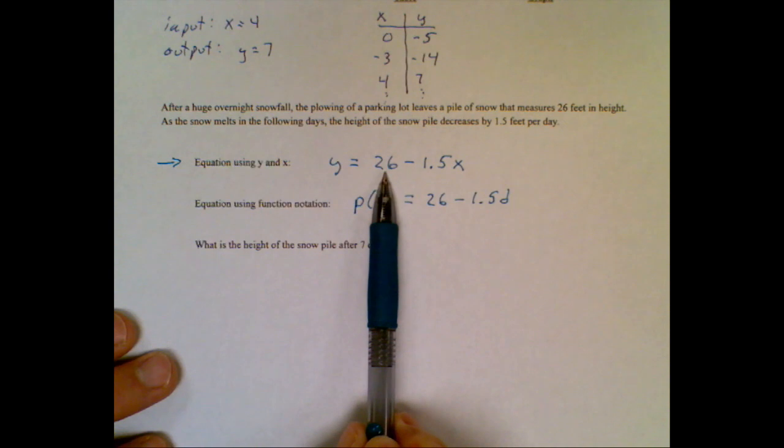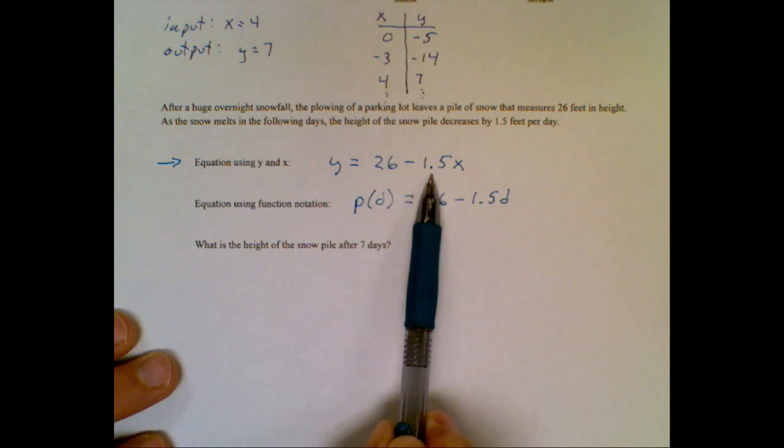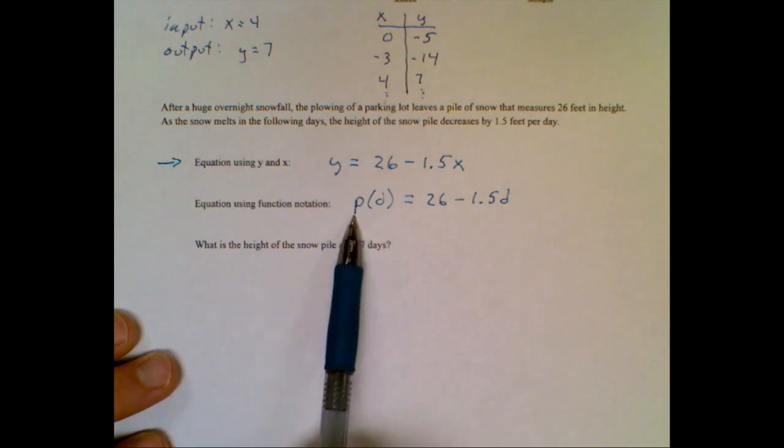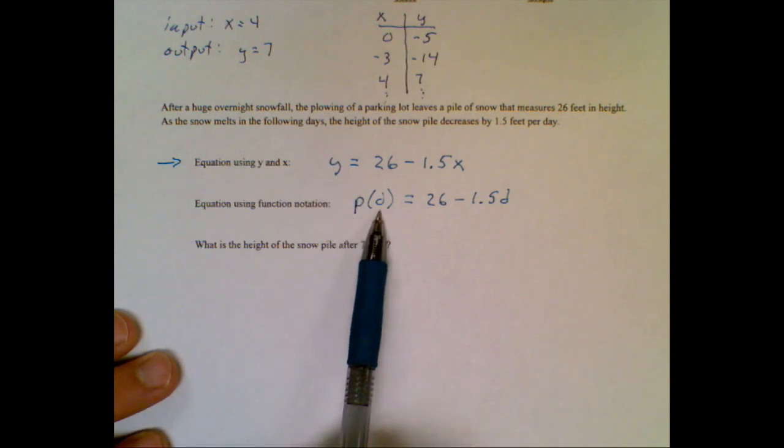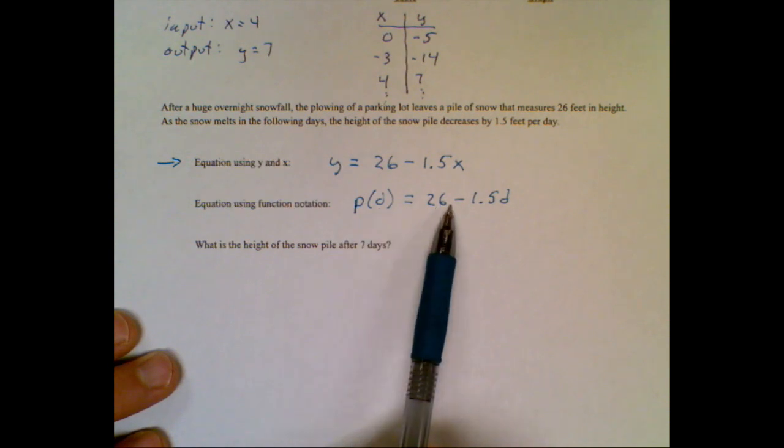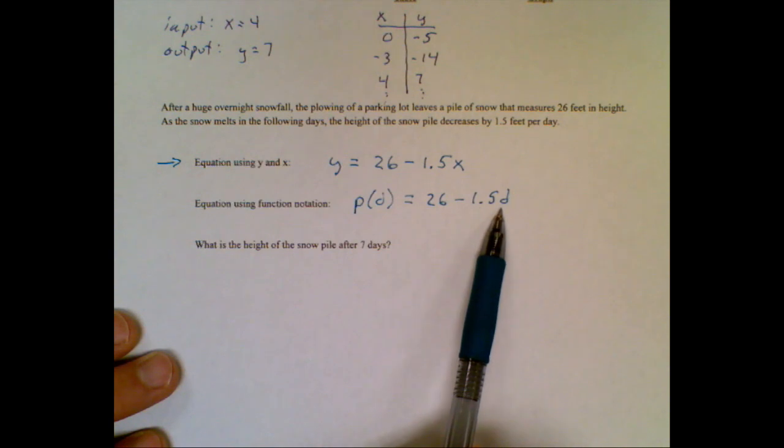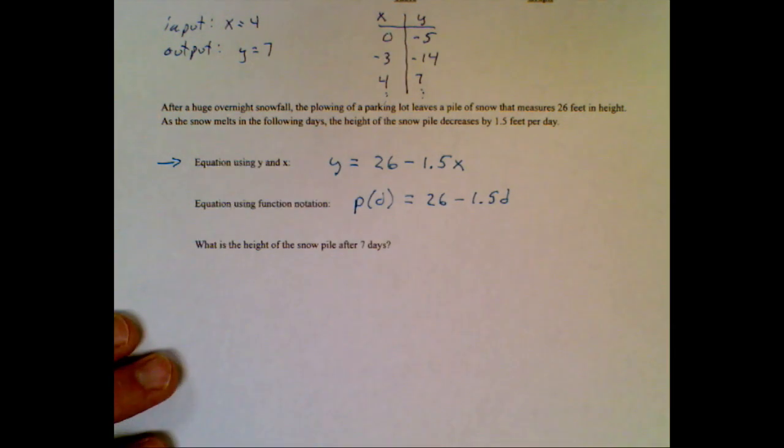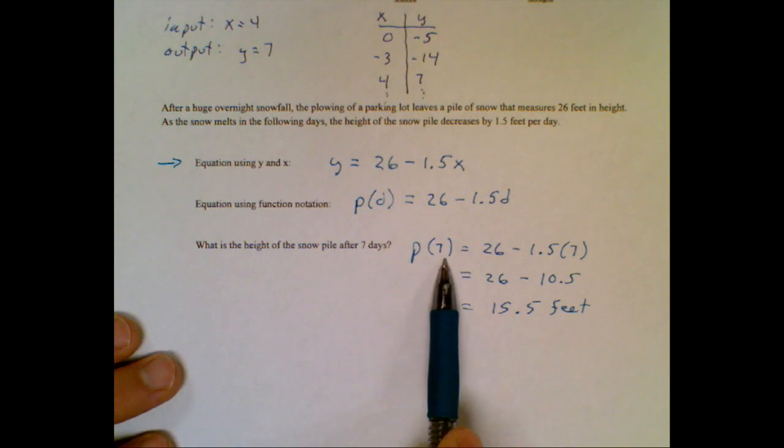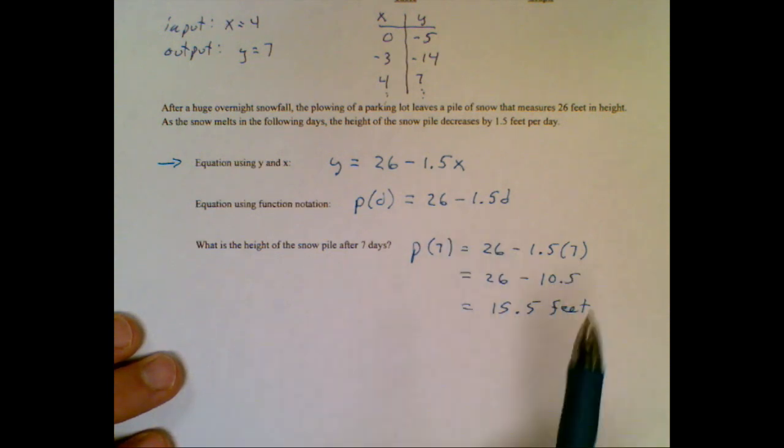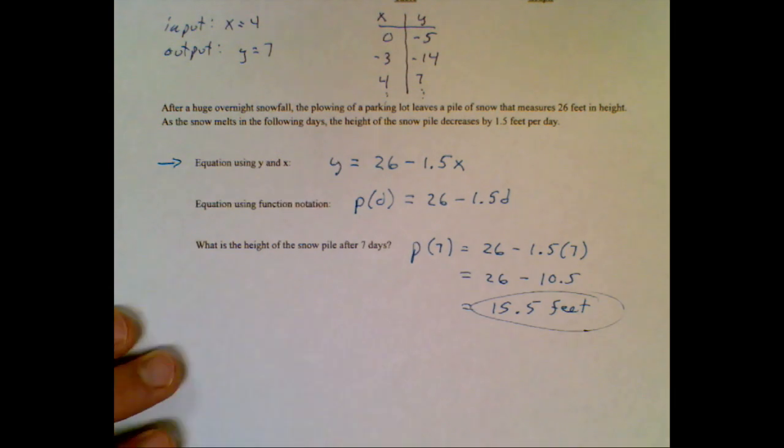The snow pile was 26 feet in height, and it was decreasing by a foot and a half per day. So we just change the symbolism. Instead of using a y, I'll use a p to represent a snow pile. d is my variable to represent the number of days. So it's 26 feet in height minus 1.5 foot per day. So now we can find the height of the snow pile after 7 days. Go ahead and pause the video so you can compare. The height of the pile after 7 days means I plug in a 7 for the d or the x, whichever way you want to look at it, and you work it out and we have a 15.5 foot snow pile.